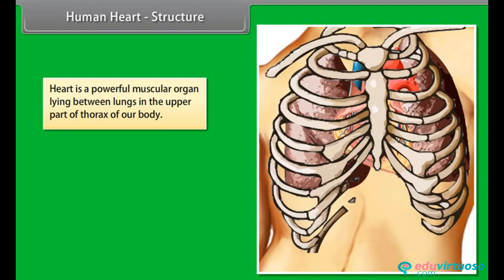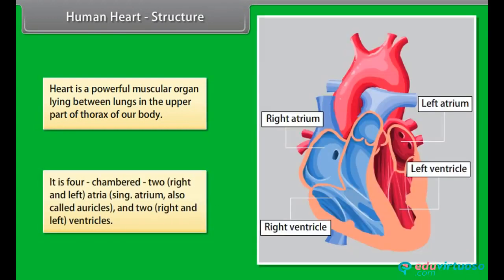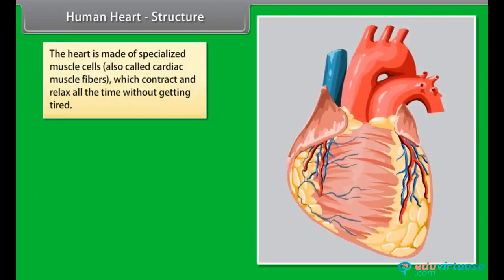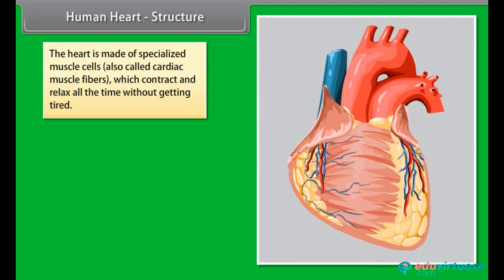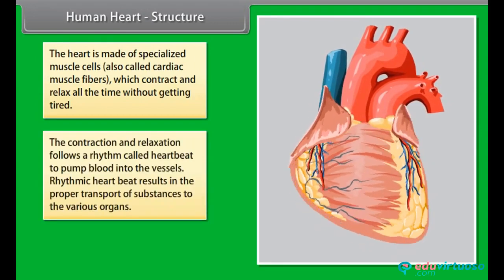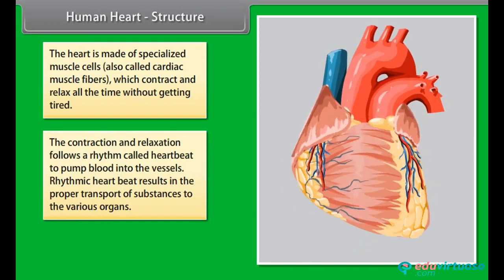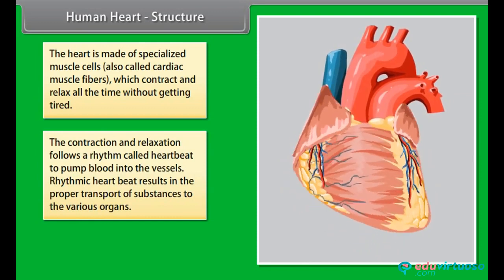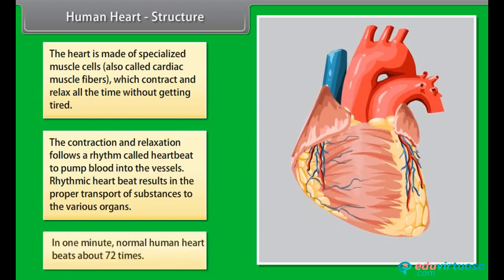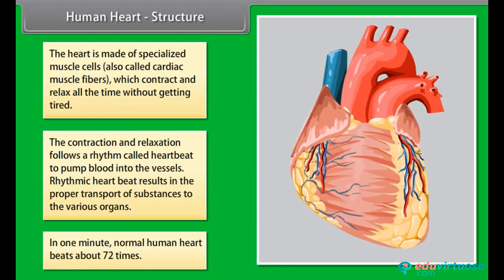The human heart is a powerful muscular organ lying between the lungs in the upper part of the thorax. It is four-chambered: two right and left atria (also called auricles) and two right and left ventricles. The heart is made of specialized muscle cells, also called cardiac muscle fibers, which contract and relax all the time without getting tired. This contraction and relaxation follows a rhythm called heartbeat to pump blood into the vessels. In one minute, the normal human heart beats about 72 times.